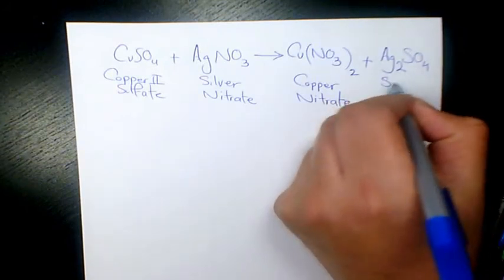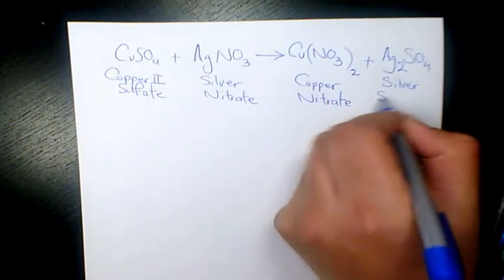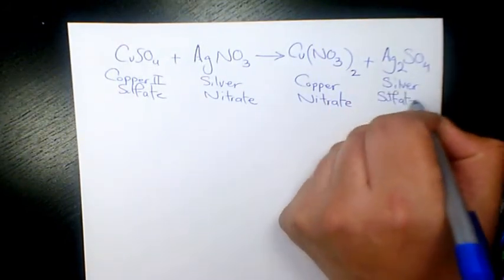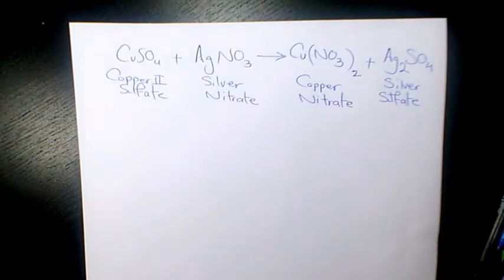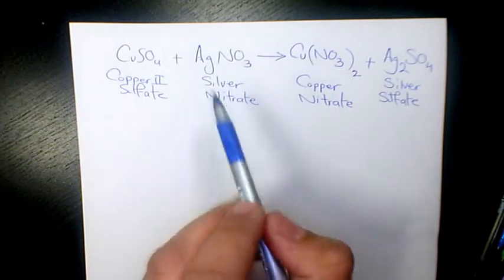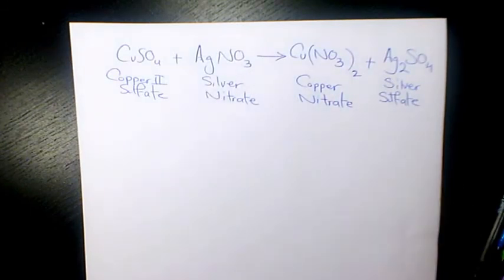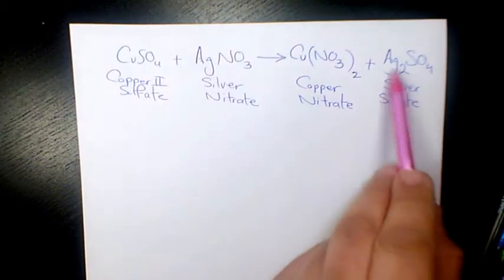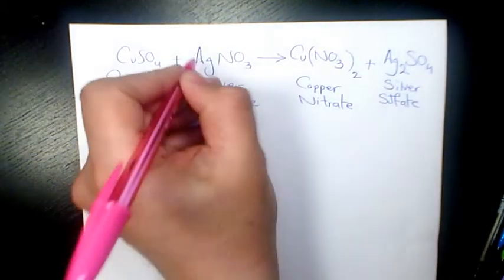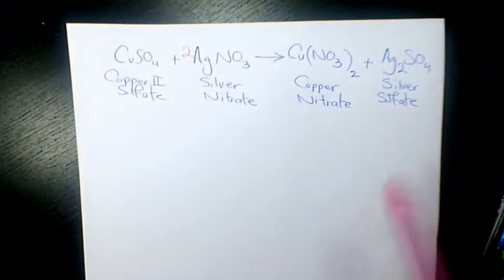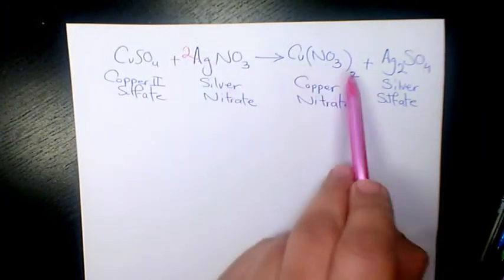So that's going to be the reaction between copper(II) sulfate and silver nitrate. Let's see how to balance it. As you see here, on the product side, silver, we have two atoms of silver and one atom here. So I'm gonna put a 2 here, and nitrate is gonna be 2 and 2, that's balanced.